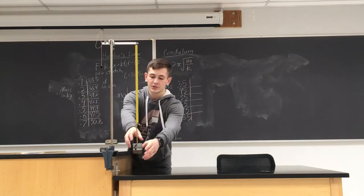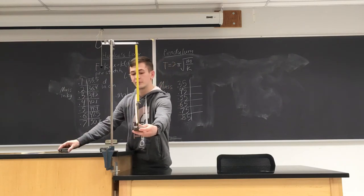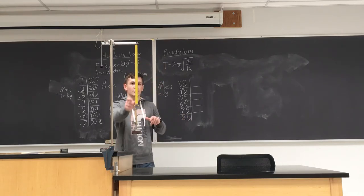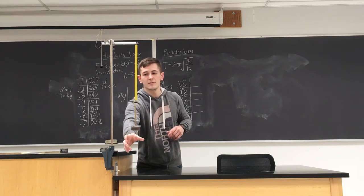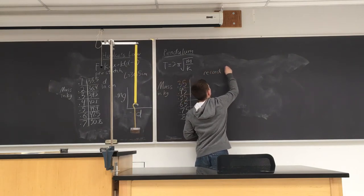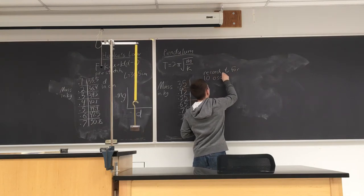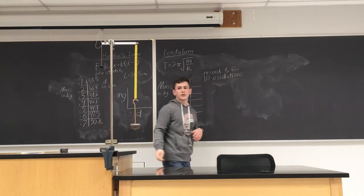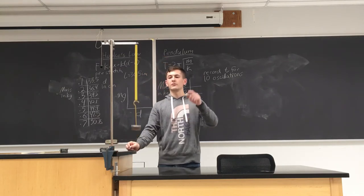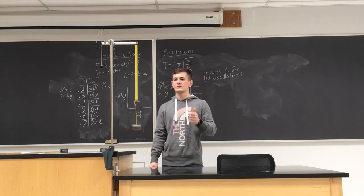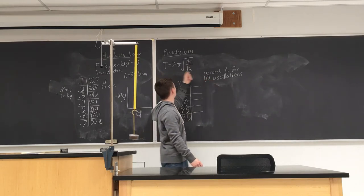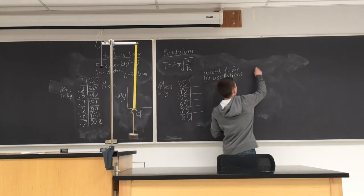For this method we don't need to pre-stretch it. We start with 350 grams on there — the hanger is 50 grams, with a 100-gram and 200-gram mass. We stretch it just a little bit to cause the spring to oscillate and record the time it takes for ten oscillations, then use that to find the period T for just one oscillation.